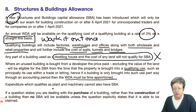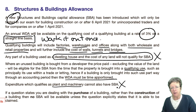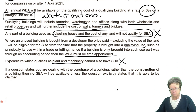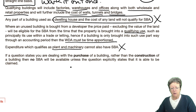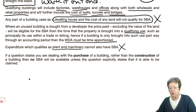Plant and machinery does not qualify for SBA. Also, if the question states you're dealing with the purchase of a building rather than its construction, then no SBA will be available unless the question specifically states that it can be claimed. Be careful of that distinction.